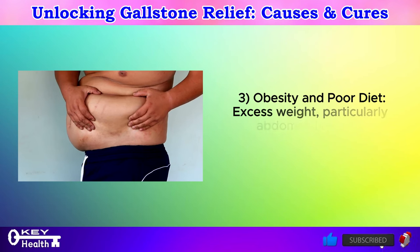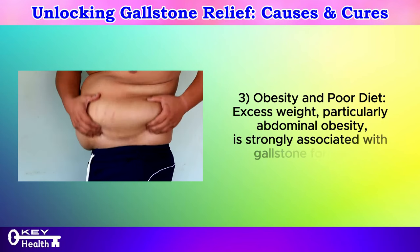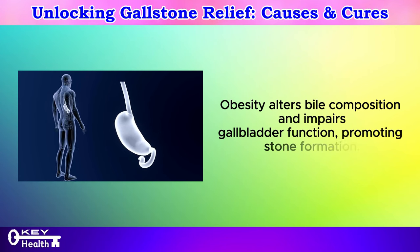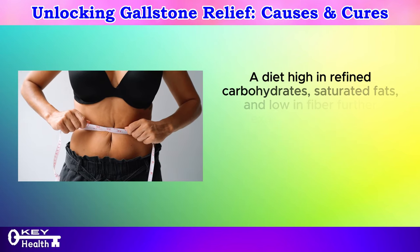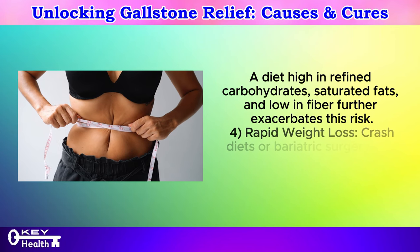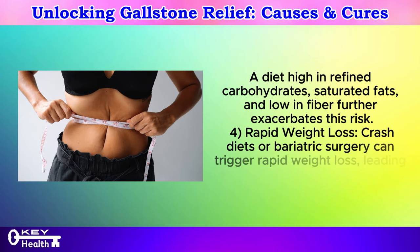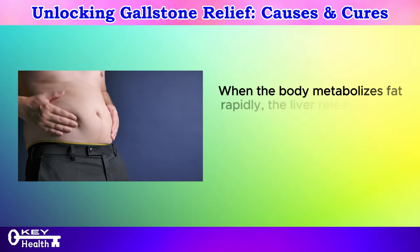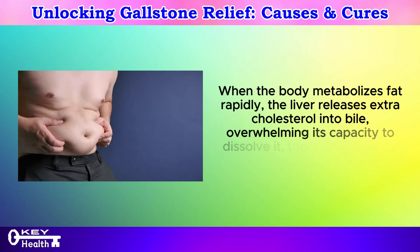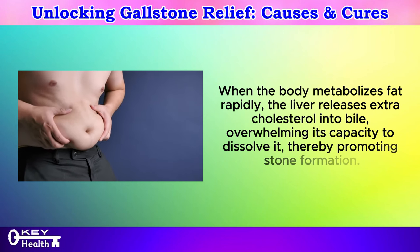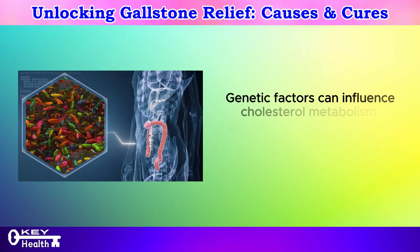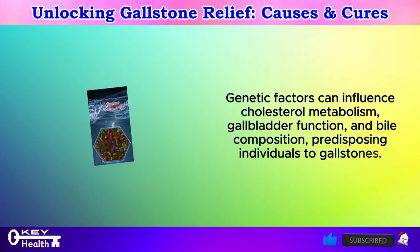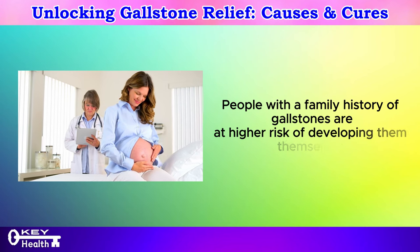Obesity and poor diet: Excess weight, particularly abdominal obesity, is strongly associated with gallstone formation. Obesity alters bile composition and impairs gallbladder function. A diet high in refined carbohydrates, saturated fats, and low in fiber further exacerbates this risk. Crash diets or bariatric surgery can trigger rapid weight loss, leading to an increased risk of gallstones, as the liver releases extra cholesterol into bile, overwhelming its capacity to dissolve it. Genetic factors can also influence cholesterol metabolism, gallbladder function, and bile composition, predisposing individuals to gallstones. People with a family history of gallstones are at higher risk of developing them.